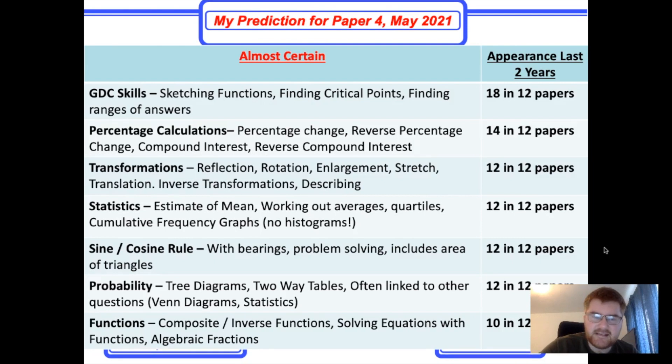My next topic is statistics. Be aware there are no more histograms on the course, so probably there is more likelihood there'll be a cumulative frequency question instead. Know how to work out the estimate of the mean, averages and quartiles using your GDC. That is a good time saver for you in the exam. Again, comes up 12 in 12 papers.